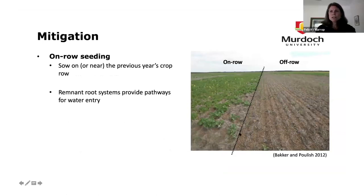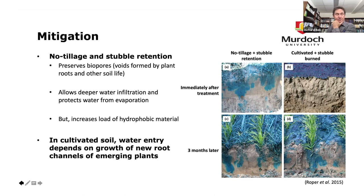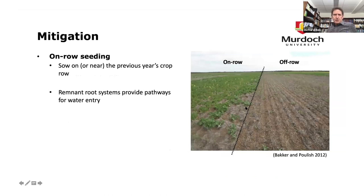A comment from a participant noted it was heartening to see that even in stubble retention paddocks, water infiltration was assisted and not necessarily made worse by organic matter. It was noted that disc openers are probably less than 20% of farmers as they are more expensive. Nevertheless, with GPS-guided steering there's field evidence that even with knife points, if you sow close to the row of the previous crop, some water entry through the old root channels is still preserved and effective.